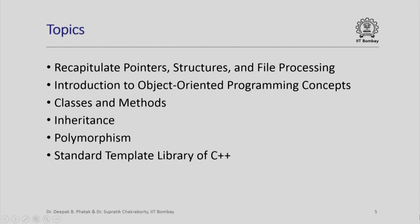The topics to be covered in this course begin with a recapitulation of pointers, structures, and file processing, followed by an introduction to object-oriented programming concepts. Next, we study the topic of classes and methods. We will discuss inheritance and polymorphism, and finally the standard template library of C++.